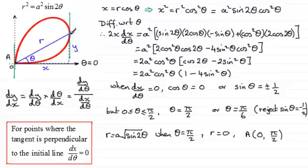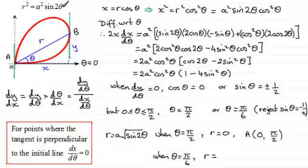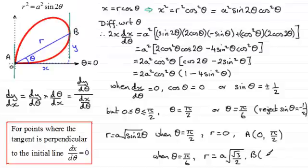For the other point, labelled B, theta equals π/6 radians. Substituting into the expression for r: 2 times π/6 is π/3, and sine of π/3 is root 3 over 2. So r equals a times the square root of root 3 over 2. The polar coordinates of point B are (a√(√3/2), π/6).